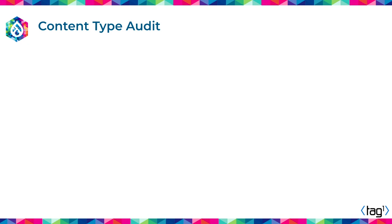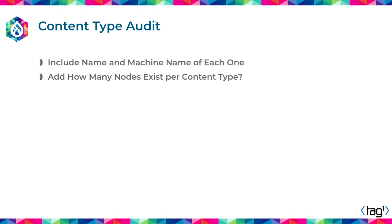Now we have the content type audit. For every content type, list the machine name, how many nodes exist per content type, and include statistics about how many of them are published or not. We worked with the scientific journal example — they had a lot of content types, and many of them only had one, two, or three nodes. You can basically consolidate those into a single one.